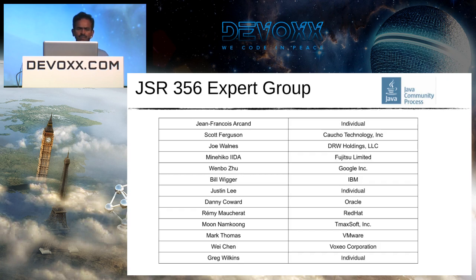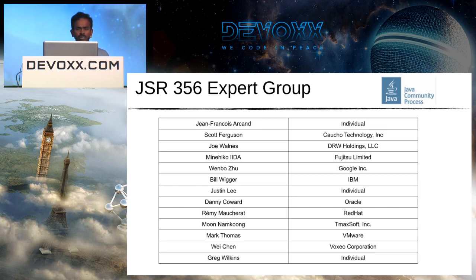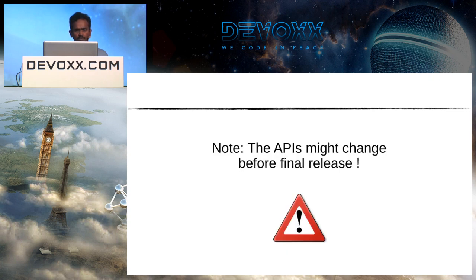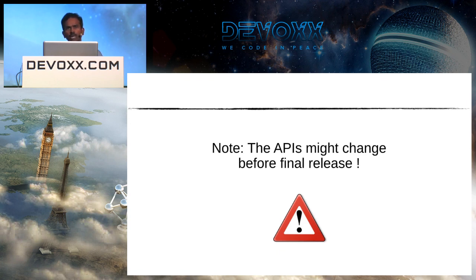The JSR 356 expert group includes members from most major corporate players and individual projects like Jetty. Before going into the API, note that the project is in very much flux — even after these slides were prepared, quite a few things have changed. The APIs might change before the final release, but the programming model direction — what we're trying to achieve for creating Java WebSocket applications — will likely remain the same.